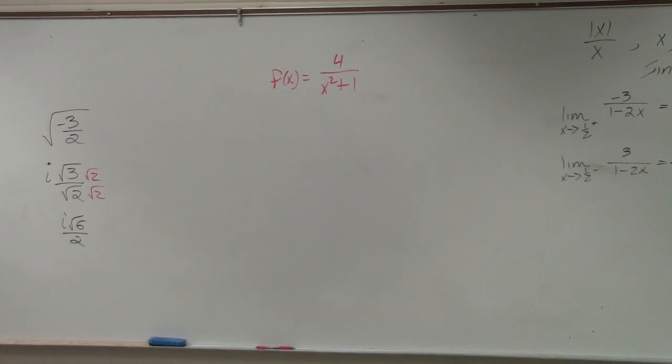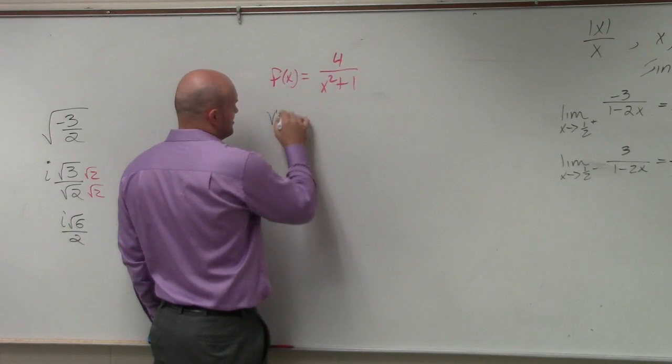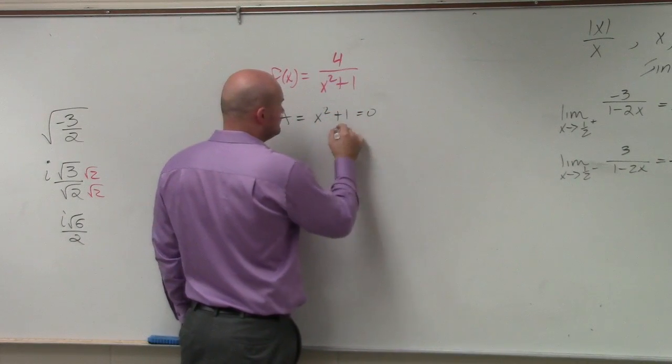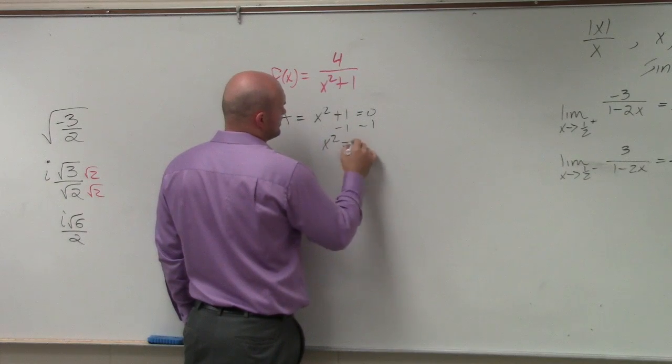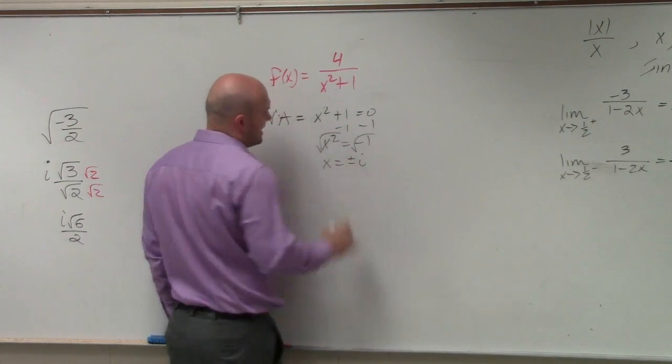Set the denominator equal to 0 and solve. So vertical asymptotes: x squared plus 1 equals 0, x squared equals negative 1, square root, x equals plus or minus i.